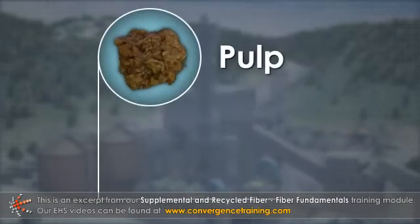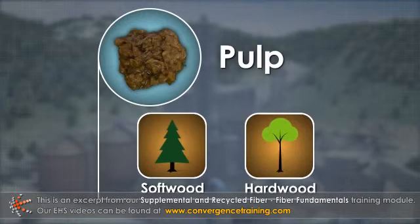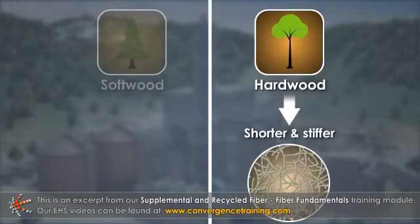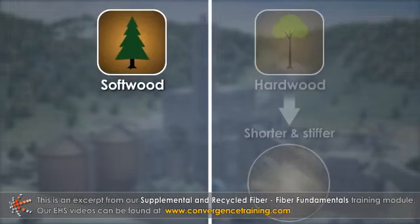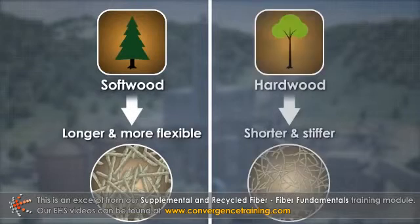Wood pulp can be made from softwoods and hardwoods, which produce fibers with different characteristics. Hardwood fibers tend to be shorter and stiffer, while softwood fibers tend to be longer and more flexible, though there is some overlap.